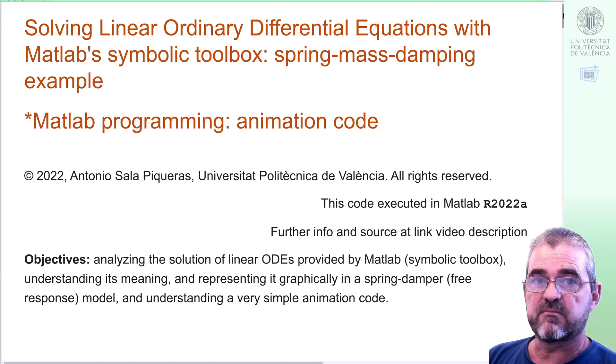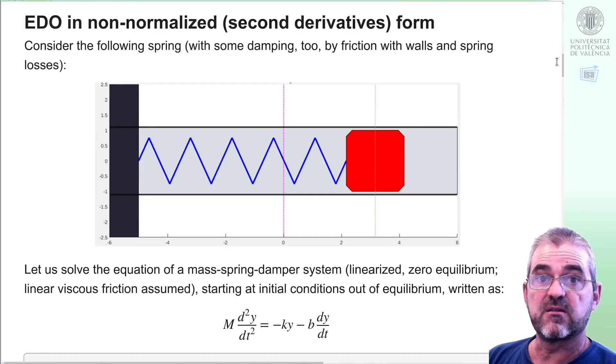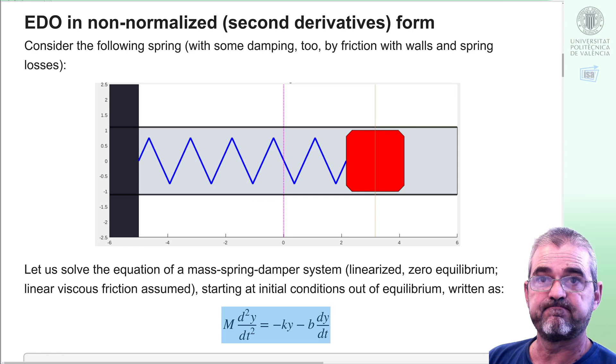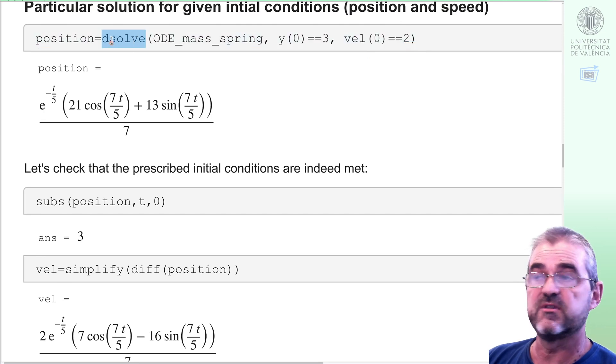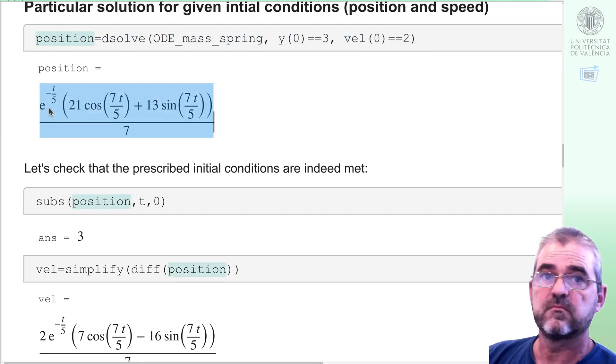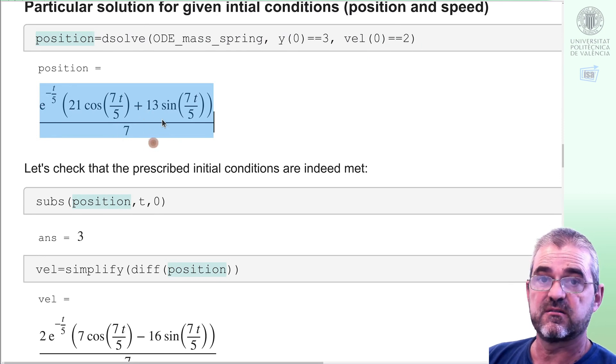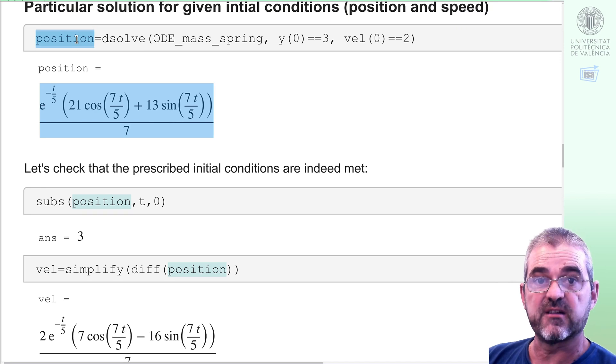So we are describing the animation code which animates this spring mass system subject to this differential equation in which we plugged numerical values for the constant parameters m, k, b, specified initial position and speed conditions and gave it to dsolve. So it ended up yielding this expression. So it's this position symbolic variable the one that we are starting with in our animation code.